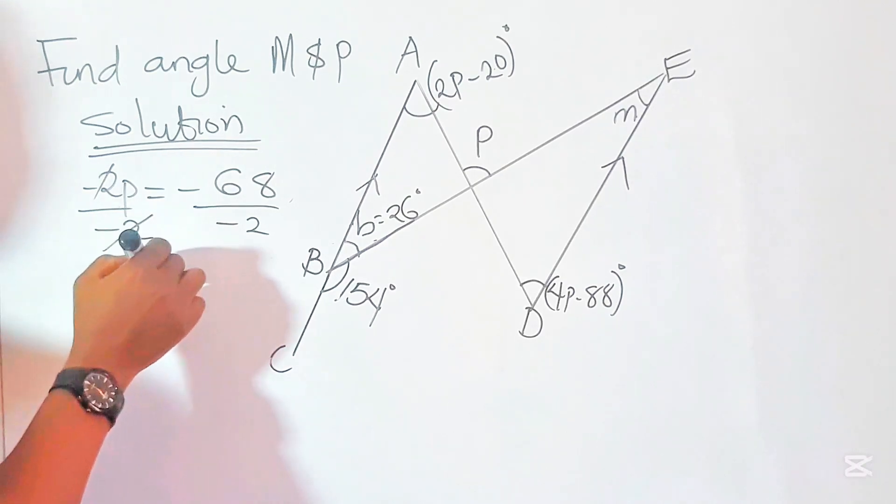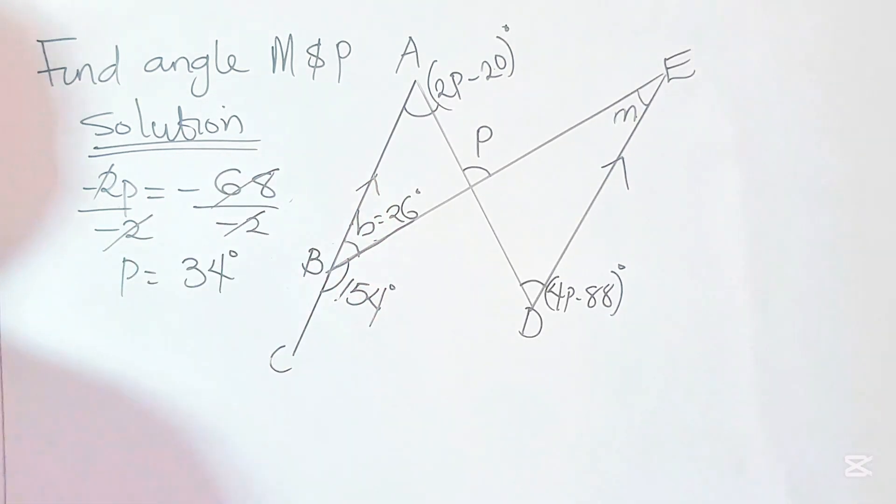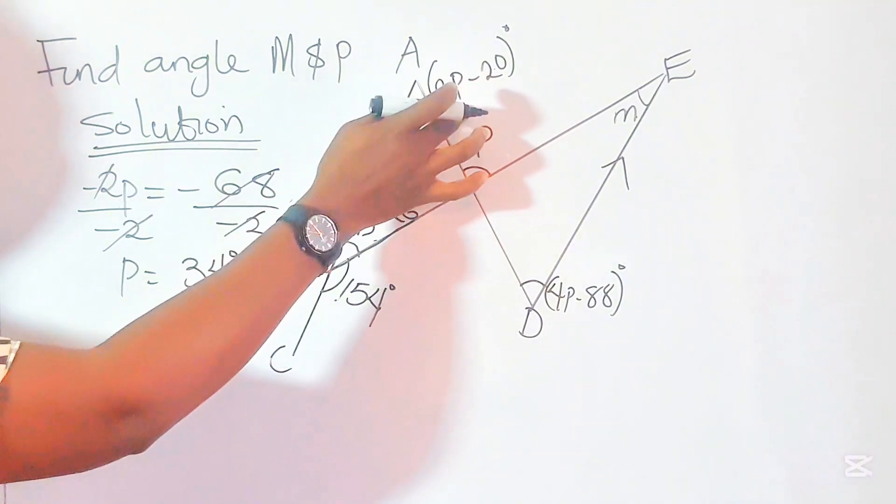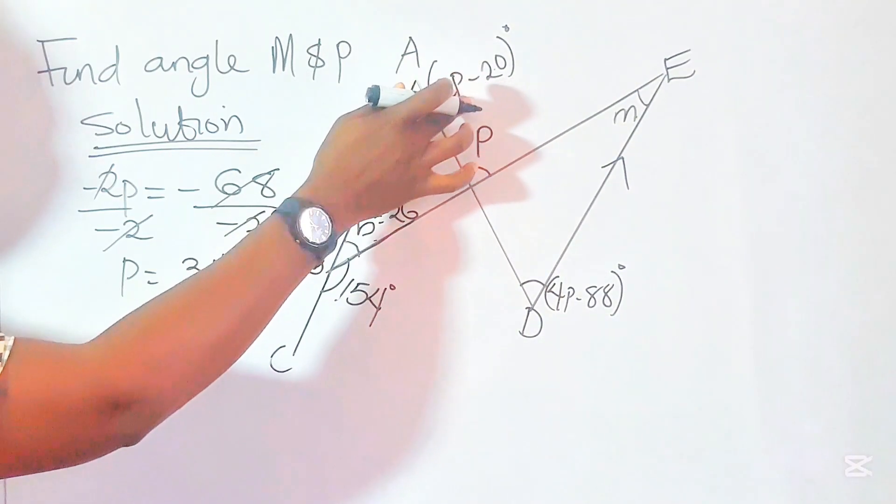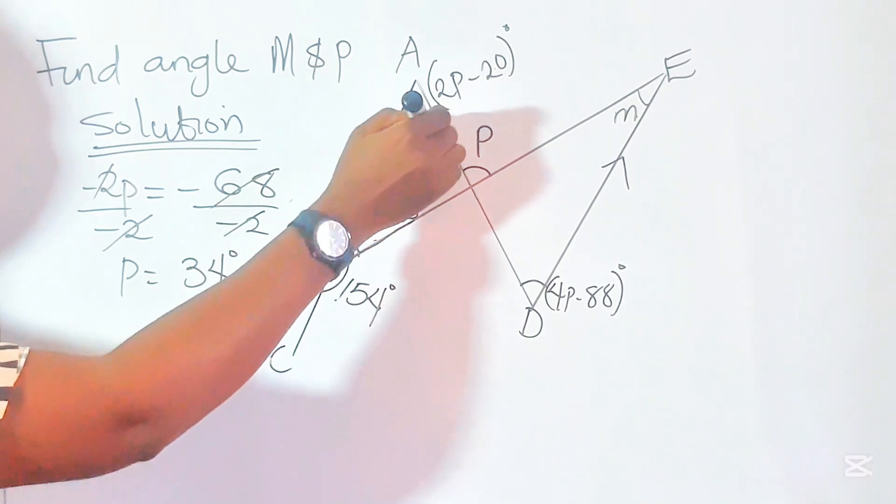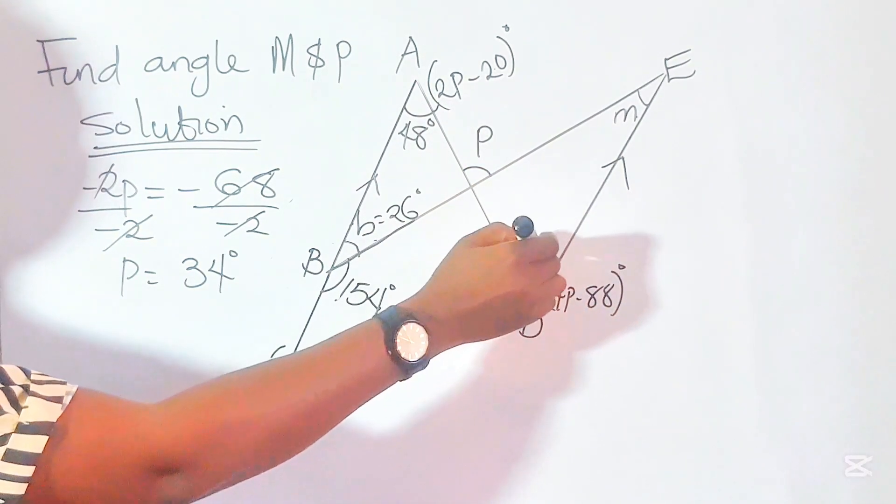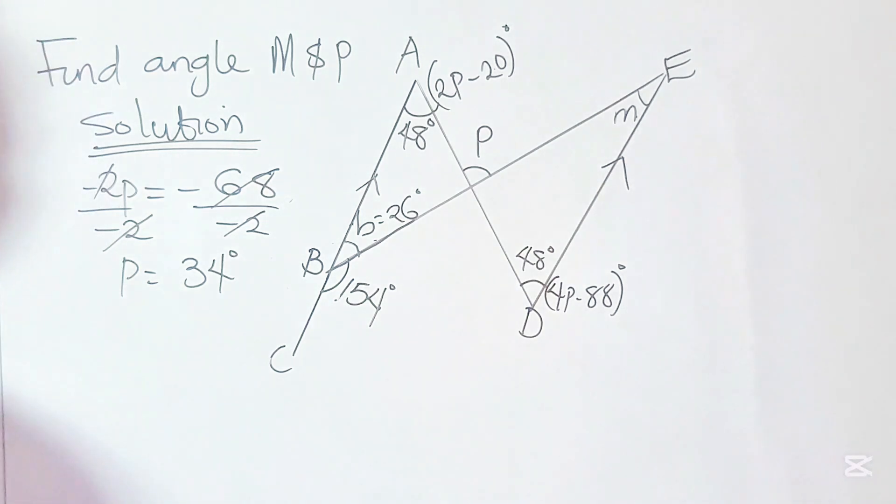This cancels out. P therefore equals 34. So let's substitute 34 here. 2 times 34 is 68. 68 minus 20 will give us 48 degrees. If we also substitute here, we have 48 degrees as the value for the angle.